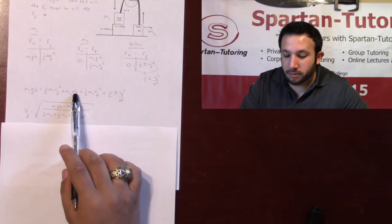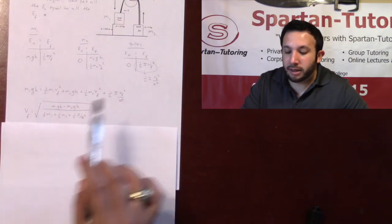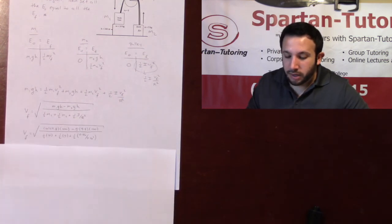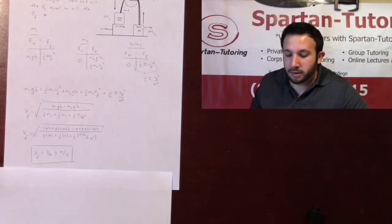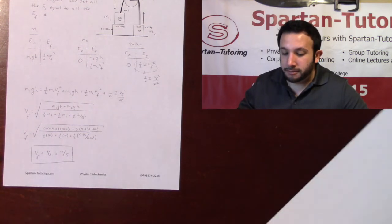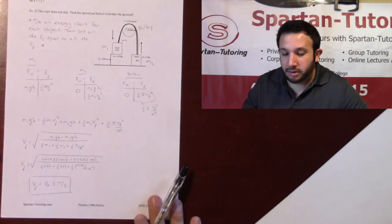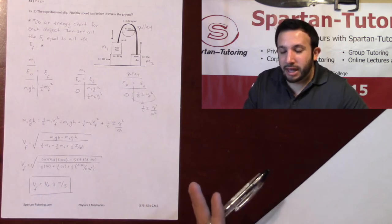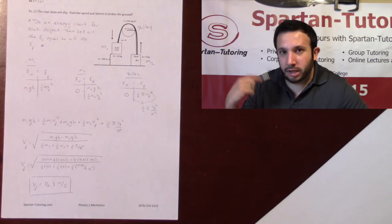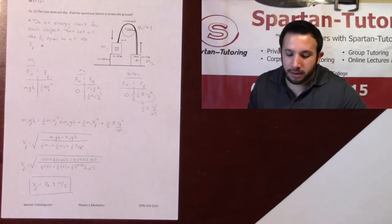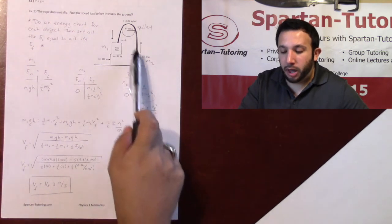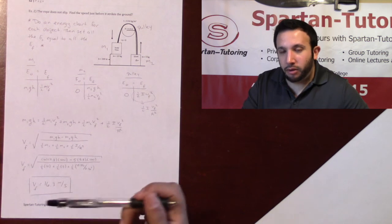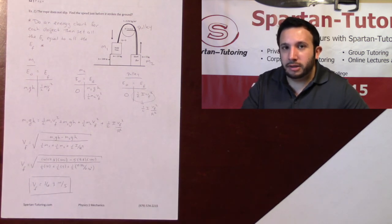And what I did is, after I solved for that VF, what I did is I moved this M2GH to the other side, and then I factored out and divided. And of course, since that VF was squared, you take the square root. And when you plug in all the numbers given, that's where I got 16.3 meters per second. Okay, so once again, energy now is pretty much exactly the same as before, except you'll have to add rotational kinetic energy. Okay, and then if you have multiple objects, do a chart for each object individually, and then set all the E naughts equal to all the EFs.